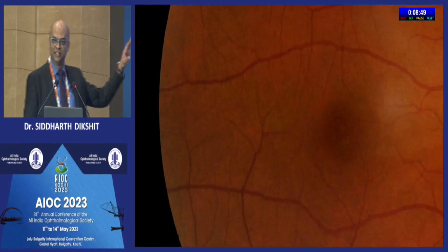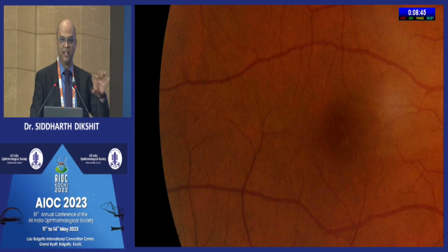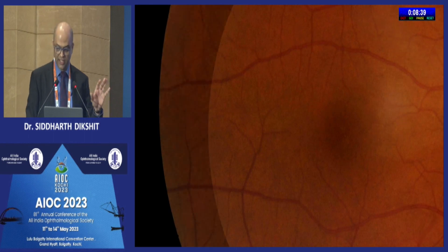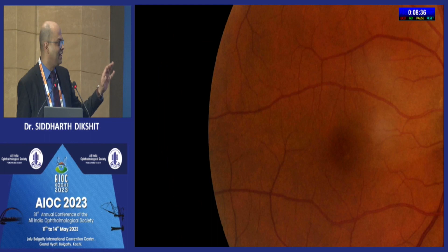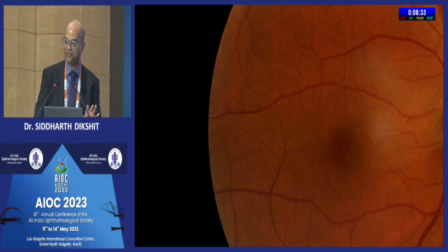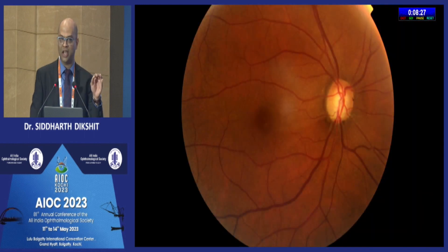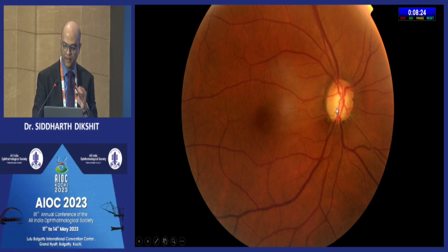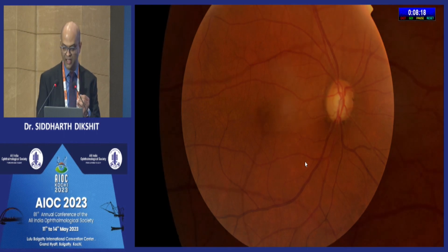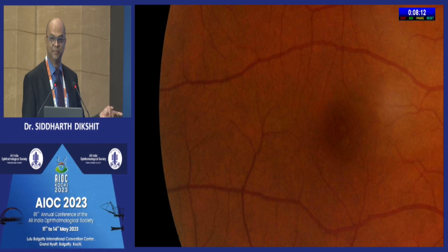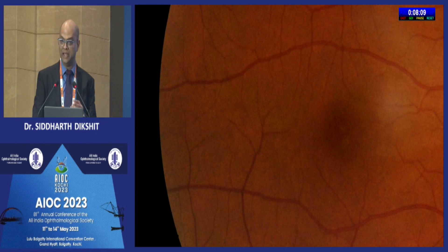If you try to look at this fundus image, focusing very close to the fovea, can anyone confidently say whether this is glaucoma or not? Let us zoom out a little bit. Try to look at this again. Can we confidently say now that there is glaucoma in this eye or not? Let me zoom out a little bit more. And once you look at this disc, look at this excavation, look at this nerve fiber layer defect inferiorly — and when you zoom in again, that nerve fiber layer defect is visible.